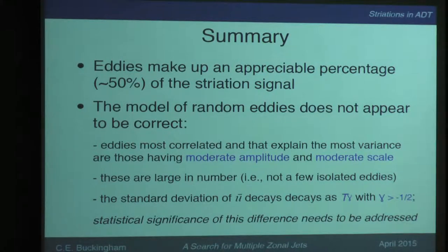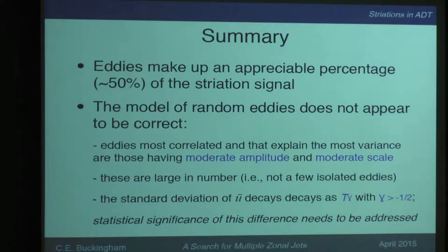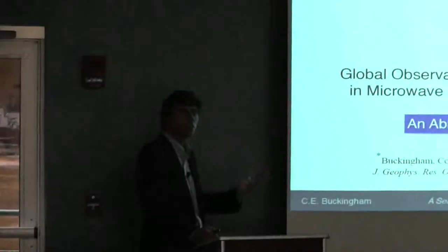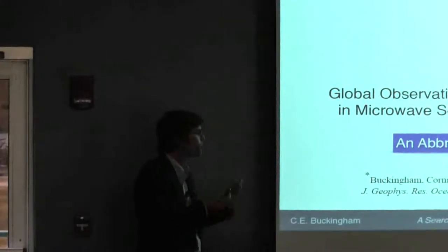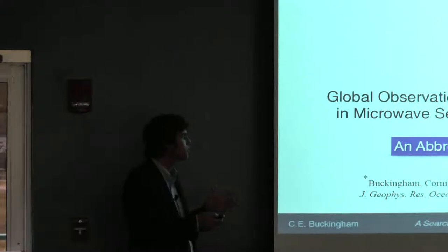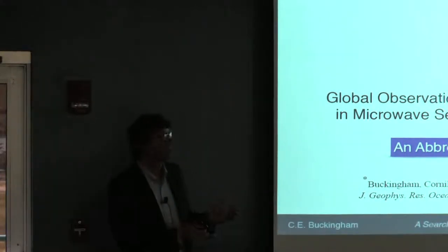In summary: eddies make up an appreciable percentage of the signal, and the random eddy model does not appear to be correct. There is a broad spectrum of amplitudes and scales associated with the striations; these eddies are large in number; and the standard deviation does not decay as proposed. The statistical significance of this latter statement needs to be addressed further. This led us to a study in sea surface temperature, since SSH suggested eddies were tied to striations but doesn't rule out jets.